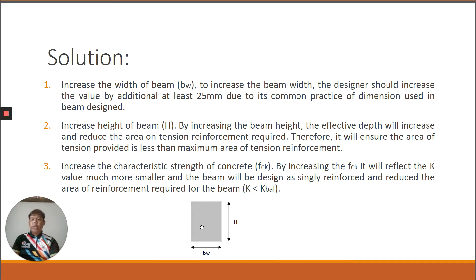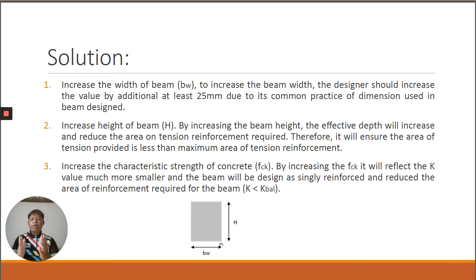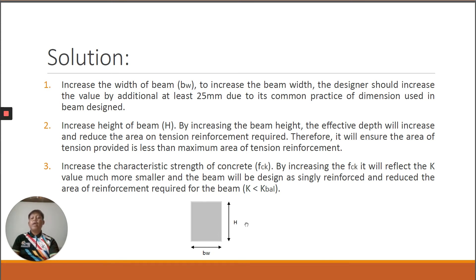Here is the beam section showing how we can manipulate BW and H. When doing initial sizing of beam dimensions, you should know how to determine the accurate size of BW and H. The common practice is that BW is approximately 0.4 of H.